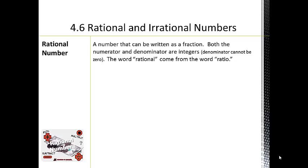We're rounding out chapter four with rational and irrational numbers. Basically, we're looking at what we call the real number system. We've been dealing with rational numbers since the beginning of the year — integers, fractions, decimals both repeating and terminating. Those are all rational numbers because they can be written as a fraction where both the numerator and denominator are integers. Remember, we can't divide by zero, so the denominator cannot be zero.